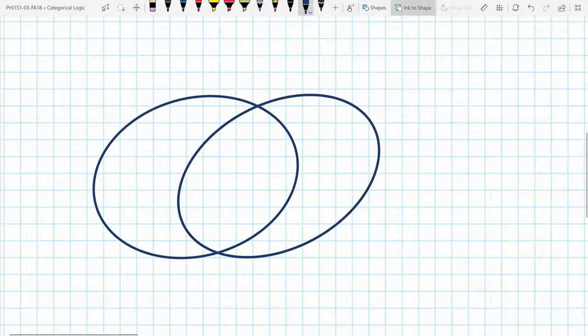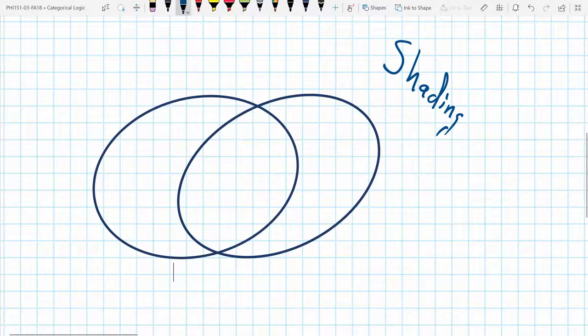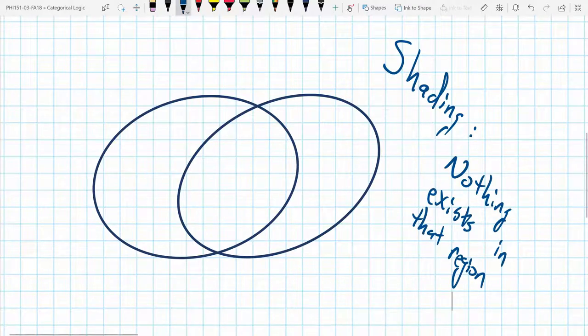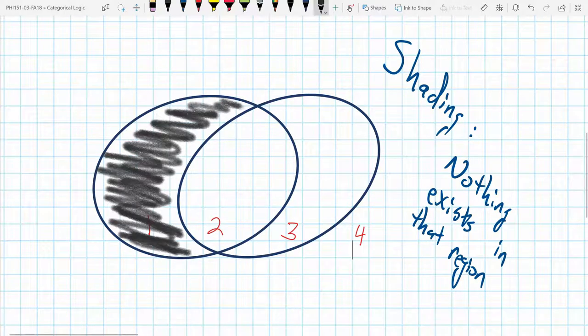And let's talk first about shading. Shading refers to non-existence. So if we're going to shade these circles, this is region 1, 2, 3, and 4. If I shade region 1, then I'm saying there's nothing that exists in that region that's shared.